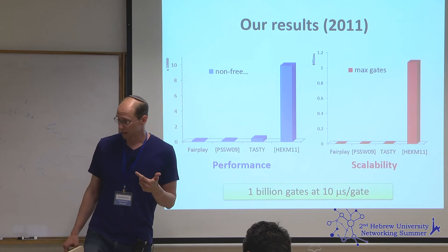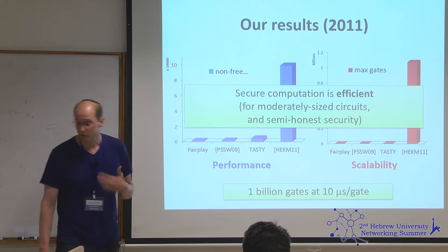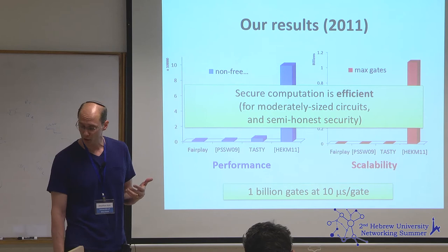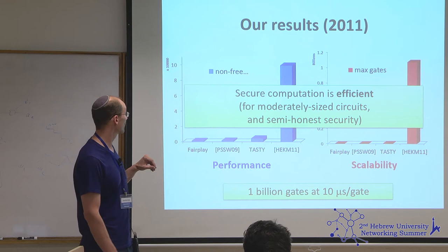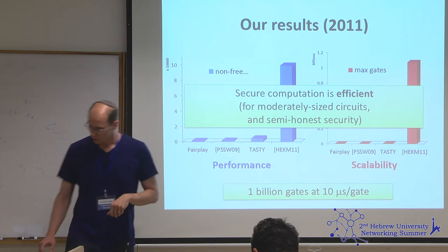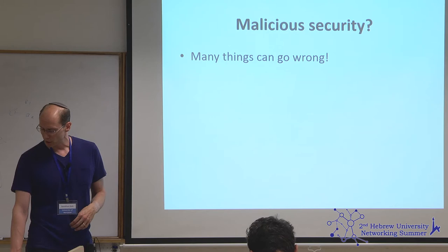The takeaway for me was that secure computation can be efficient for moderately sized circuits, at least if you're happy with semi-honest security. These results are all for semi-honest security and don't say anything about what happens with a malicious attacker.